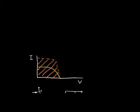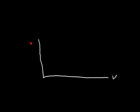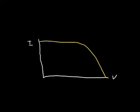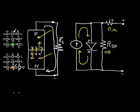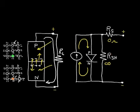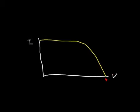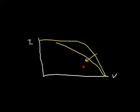Let's analyze the effect of the series resistance on the solar cell's current-voltage characteristic. As the series resistance R_s is increased, the slope of the IV curve changes and the curve tilts, losing area. So increasing series resistance decreases the solar cell's ability to deliver power to the load.